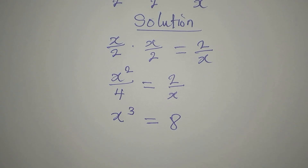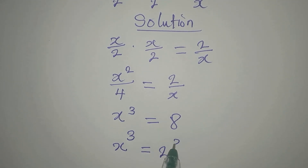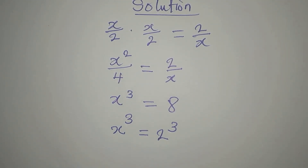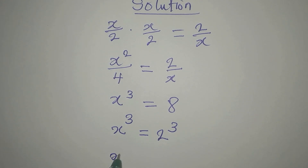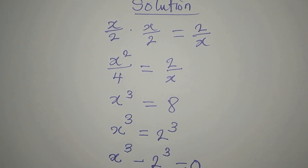Remember we are directed to solve this completely, so we have x to the power of 3 that is equal to 2 to the power of 3. Now the powers are the same. If we equate the bases, we'll have one solution. So let's bring this to the left: x to the power of 3 minus 2 to the power of 3 equals 0.